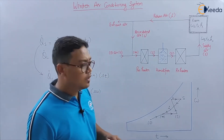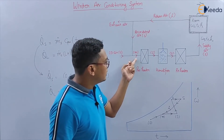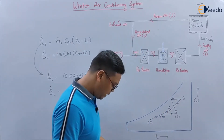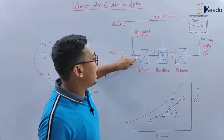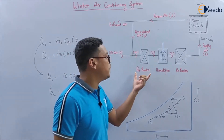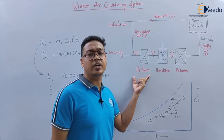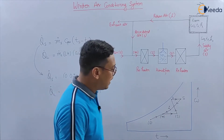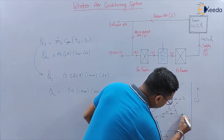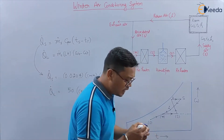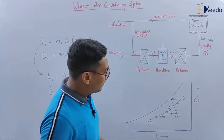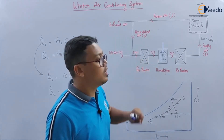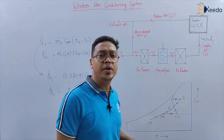Now, the preheater — the air which is mixed at point M shall be preheated. This heating will be from M to 1, which is at constant omega. In this case, there is no change in the moisture content.